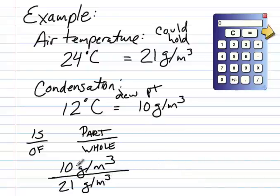So we're going to write up 10 grams per cubic meter divided by 21 grams per cubic meter. Now in science, it is very important that we keep writing down these units. Science is not just about numbers. These numbers have meaning. And so we always make sure that we write down those units.